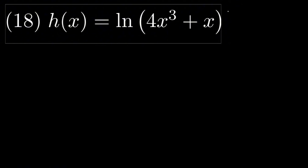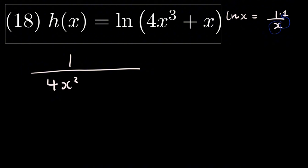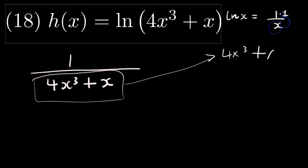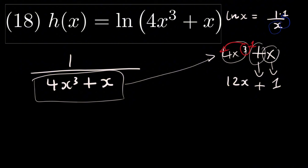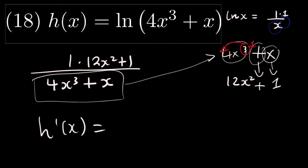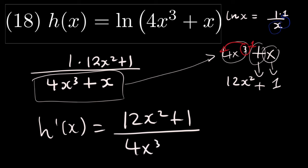For the next question, we have ln(4x³ + x). The derivative of ln x is 1/x, so we write 1 divided by (4x³ + x), then find the derivative of (4x³ + x) and put it in the numerator. The derivative of x is 1 and the derivative of 4x³ is 12x squared. So the final derivative is (12x² + 1) divided by (4x³ + x).